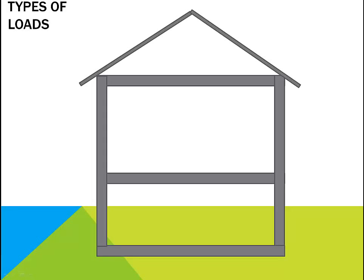What are the different types of loads acting on a structure? Let's look at this house and see what loads may apply here. First one is the dead load due to beams, columns, and so on — that is, due to the load of the structure itself.